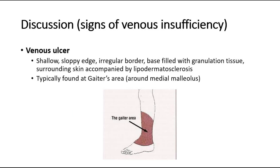Lastly, venous ulcer is a sign of venous insufficiency, typically found at the gaiter area around the medial malleolus. Venous ulcers are usually described as shallow, with sloping edges, irregular borders, and a base that may be filled with granulation tissue. The surrounding skin is almost always accompanied by lipodermatosclerosis.